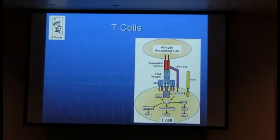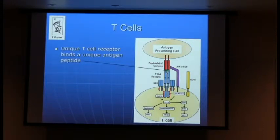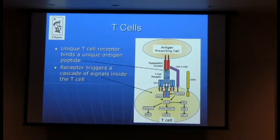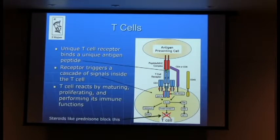The cells that recognize these antigens are called T-cells. Every single T-cell in your body expresses a different receptor on its surface called a T-cell receptor, and there are billions of different T-cells with billions of different specificities for billions of different possible foreign peptides — that's how you can respond to anything you've never seen before. The antigen-presenting cell drives signals inside the T-cell that make it mature, proliferate, and drive an inflammatory response. Prednisone, which we've used for decades, works by blocking NF-kappa B, a critical piece of this signal.